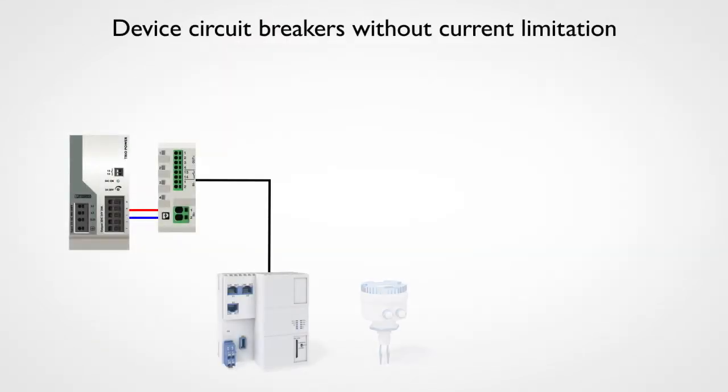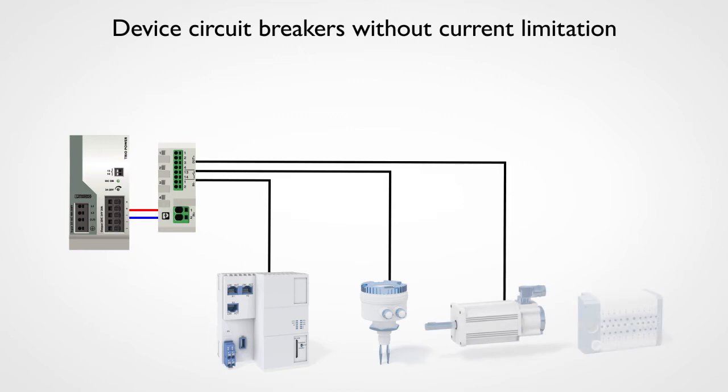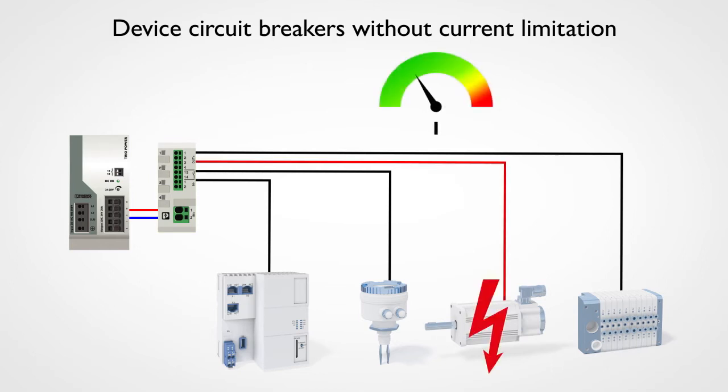Each individual current path in the power supply network of a system is protected. If a short circuit occurs in one of these paths, the current will rise rapidly. If the resulting load on the power supply exceeds its performance limit, this will cause the voltage to drop.